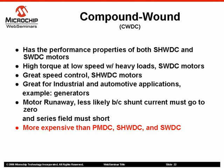Compound wound brush DC motors are great for industrial and automotive applications such as generators. With compound wound brush DC motors, the problem of motor runaway is less likely because the shunt current must go to zero and the series field must be shorted — the chances of both conditions occurring at the same time is very small. However, a compound wound brush DC motor is more expensive than a permanent magnet, shunt wound, or series wound brush DC motor.